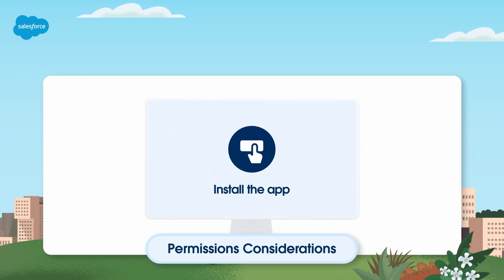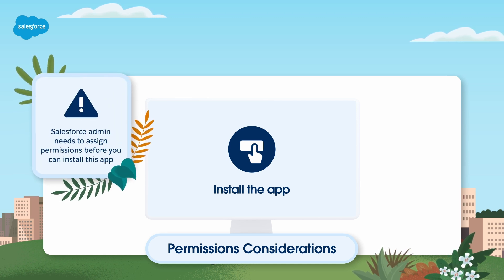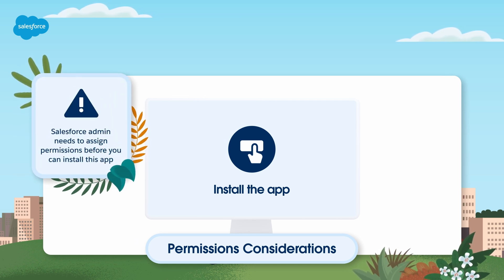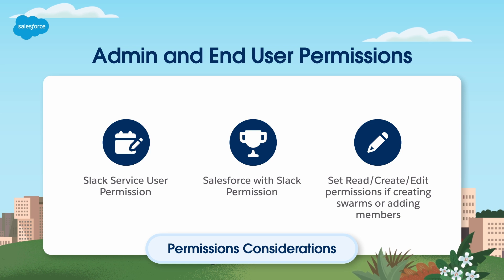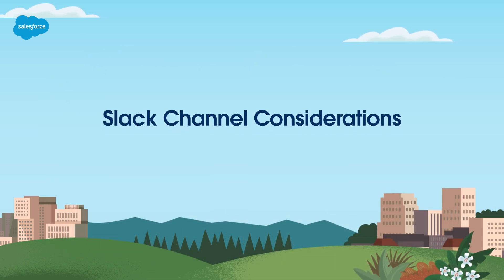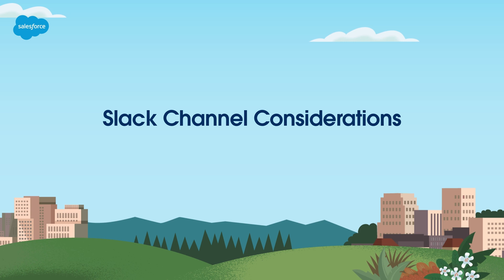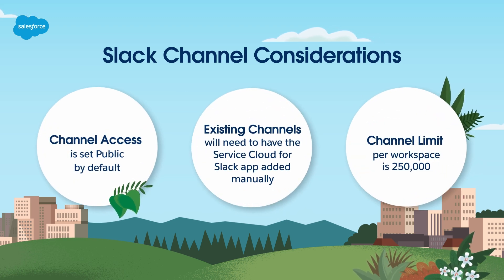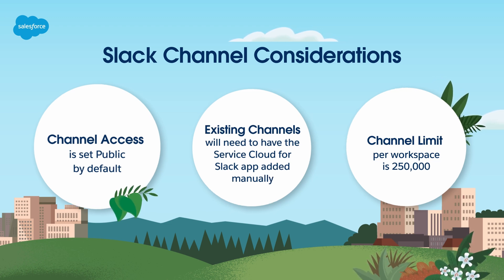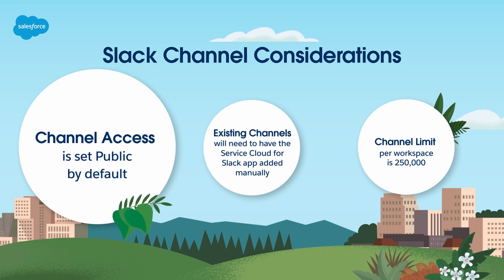Next, we'll review permissions considerations. To prevent any errors, make sure Salesforce admins assign themselves the correct Salesforce Slack permissions before installing the app. Both admins and users need Slack Service User, Salesforce with Slack, Read, Create, and Edit permissions. Only Salesforce admins can set access levels. Before installing Slack for Service, make the Slack admin a Salesforce admin, or have the Salesforce admin sit with the Slack app installer and log in when prompted. Note that Salesforce integration doesn't currently support mass provisioning of apps. When you create a Slack channel, its channel access is automatically set to public. To launch a private channel, you must specifically select private during setup.